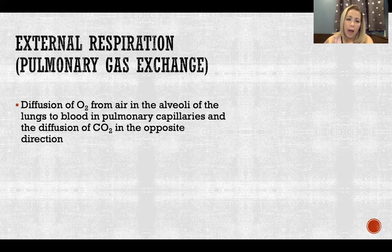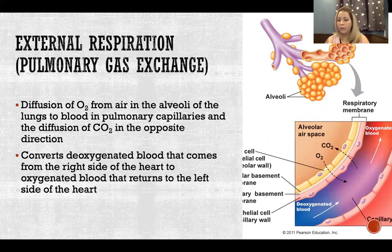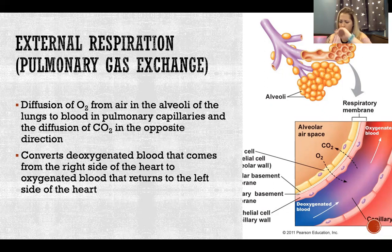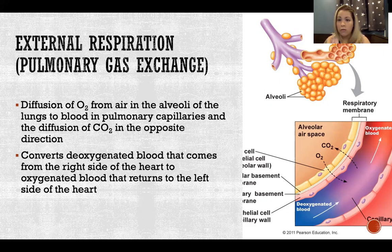That's where oxygen from the air diffuses across the membrane into the blood inside the capillaries, and carbon dioxide diffuses from inside the blood across into the air so it can be exhaled. This process of external respiration is what oxygenates the blood — converting deoxygenated blood full of carbon dioxide into oxygenated blood full of oxygen that can then return to the left side of the heart for circulation.